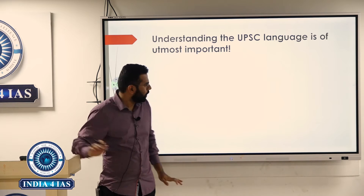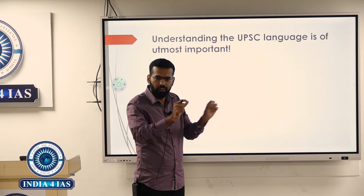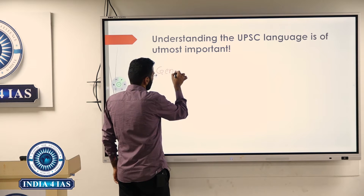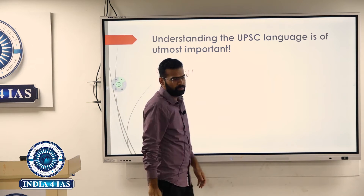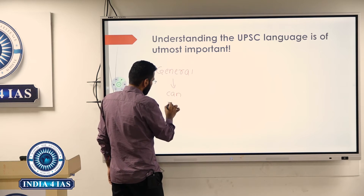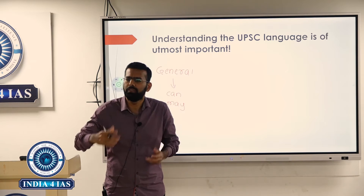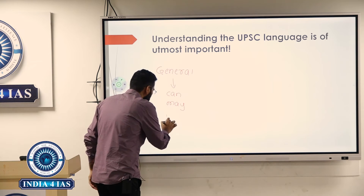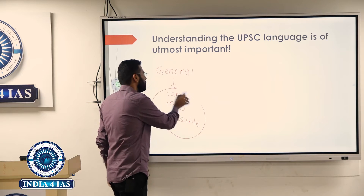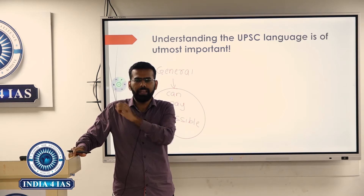In UPSC prelims, you will have usually three kinds of sentences. First: general sentences with terms like 'can,' 'may,' which talk about possibility. When UPSC talks about possibility, 99% of the time that statement will be right.